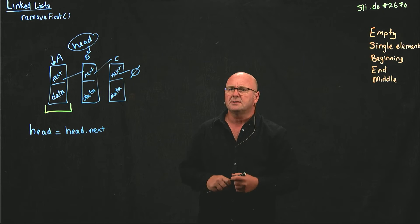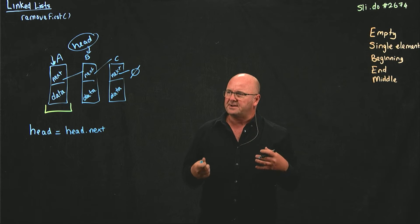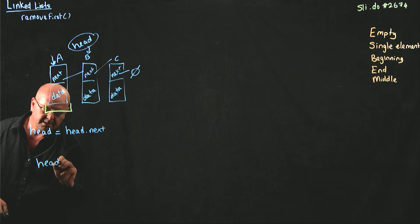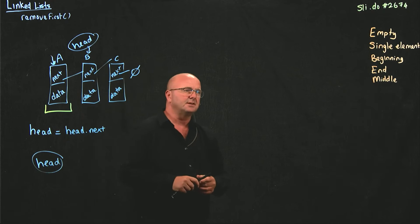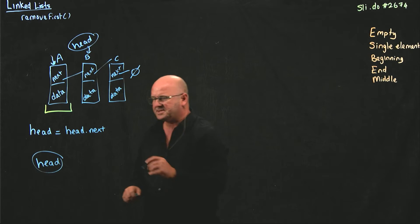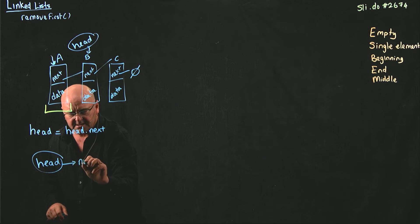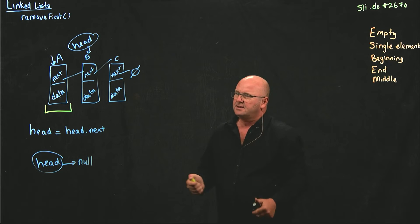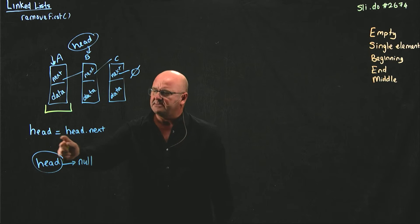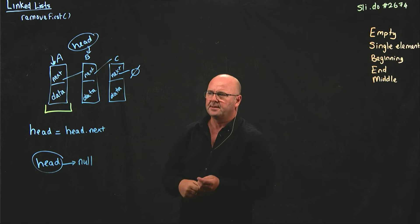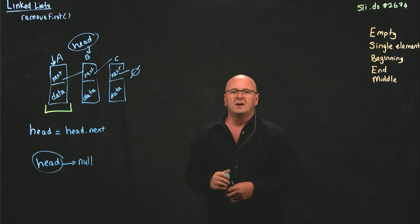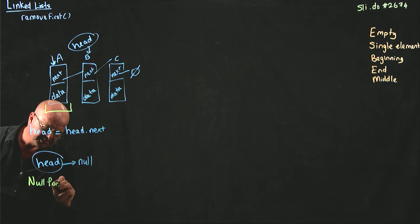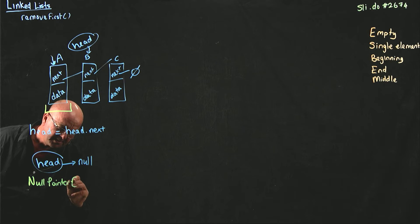What does a linked list look like if we have an empty list? We have our head pointer, and what does head point to when our list is empty? Null. So head points to null. What's going to happen if our list is empty and we say let's take head and point it to head.next? We're going to get your new best friend — a null pointer exception.